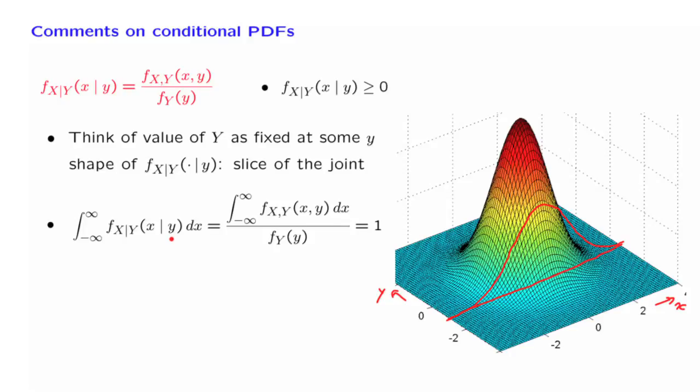Indeed, if we fix little y and take the integral over all x's using the definition, and because this term is a constant and does not involve x, we only need to integrate the numerator, and we recognize that the numerator corresponds to our earlier formula for the marginal distribution, the marginal PDF of y. From the joint, this is how we recover the marginal PDF of y.